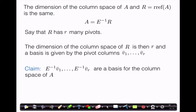What we're going to show now is that E inverse times V1 up to E inverse times Vr are a basis for the column space of A. If we can do that, then we'll be done, because we will have found a basis for the column space of A with r many vectors. Therefore, the dimension of the column space of A is equal to r, which is the same as the dimension of the column space of R.